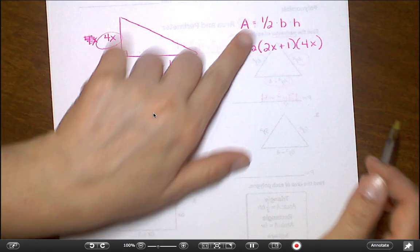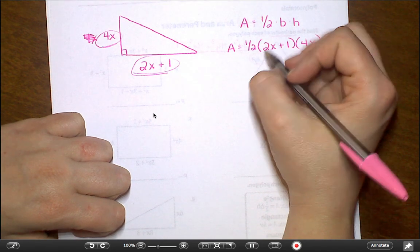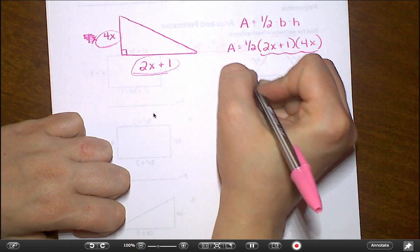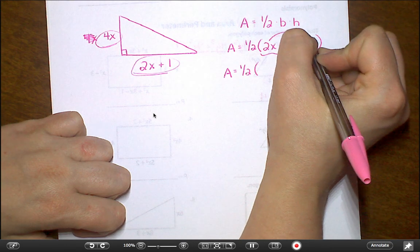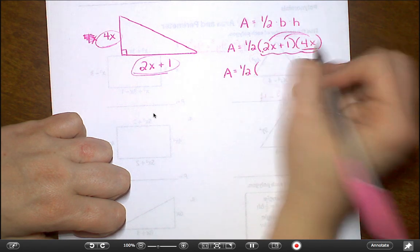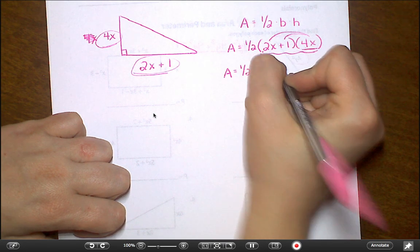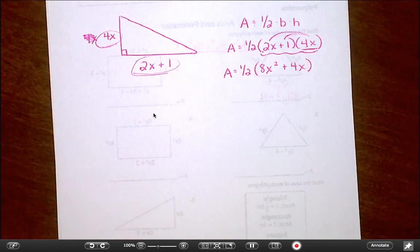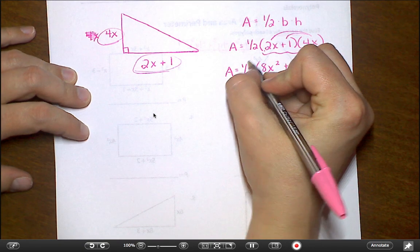Now, I see a lot of mistakes with people working with this one half. So here's what I'm going to suggest. Skip it for now. Just do these. Start with that. So I'm going to think of it as 2x times 4x. It doesn't matter. That's going to be 8x squared. And then 1 times 4x is 4x. And I can't combine those two in there. Now what I want to do is take that 1 half and distribute it in.